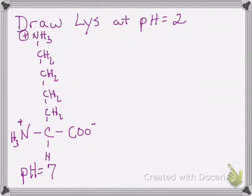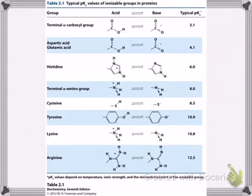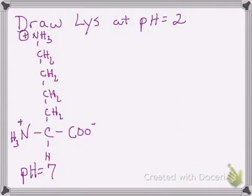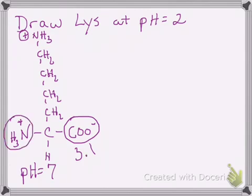The way I always start is like I did the last time — I first don't worry about the pH, but just draw the amino acid the way I know it at neutral pH. So I'm going to draw lysine as I know it at pH 7. Now I have to figure out which parts of this amino acid might change based on pH. Going to the chart, we definitely have a terminal carboxyl group at pKa 3.1, and we definitely have the terminal amino group at pKa 8.0. I'll identify those on the structure — the carboxyl is 3.1 and the amine is 8.0.